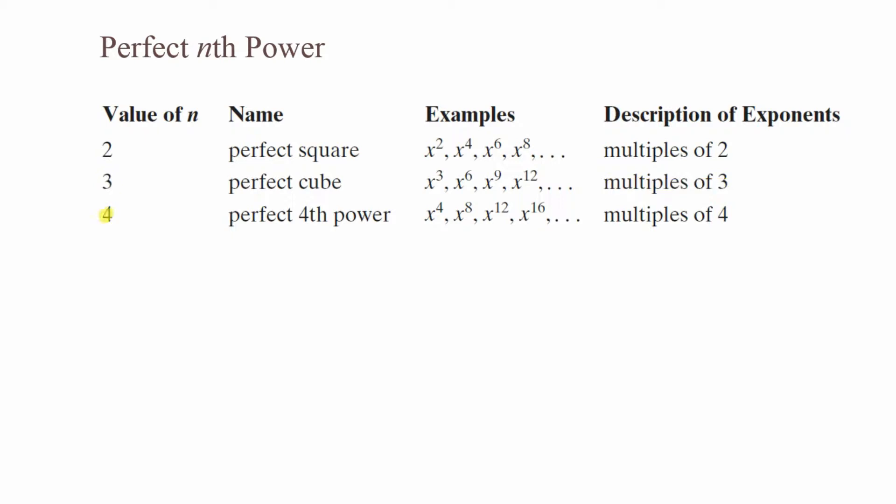If the value of n is 4, we're looking at the perfect fourth power. Some examples would be x to the fourth, x to the eighth, x to the twelfth, x to the sixteenth. And our exponent would be any multiple of 4.